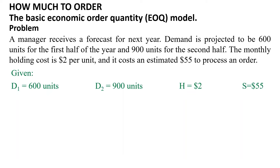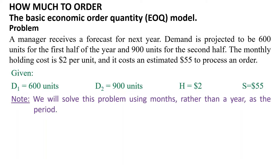The given values are: demand projected for the first half of the year D1 equals 600 units, and for the second half D2 equals 900 units. The monthly holding cost H equals $2 per unit per month, and the order cost S equals $55 per order. Note: we will solve this problem using months rather than a year as the period.